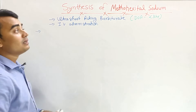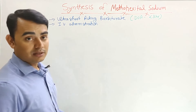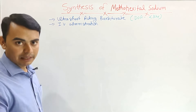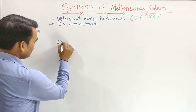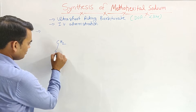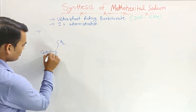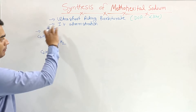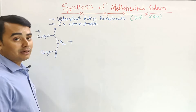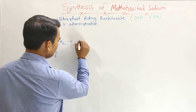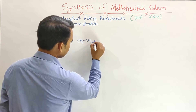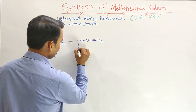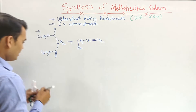Now let's discuss the synthesis of methohexital sodium. The synthesis starts with diethyl malonate — that is malonic acid diethyl ester. The structure of diethyl malonate has C2H5-O-C(=O)-CH2-C(=O)-O-C2H5. This diethyl malonate is then reacted with 3-bromopropene, which is CH2=CH-CH2-Br.